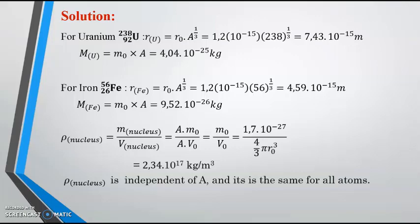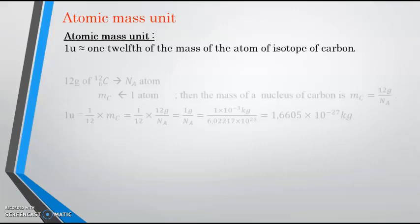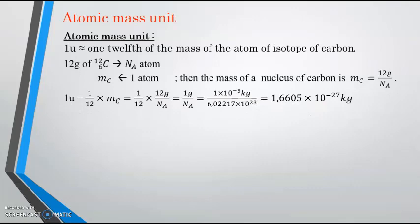Atomic Mass Unit. 1U represents one twelfth of the mass of the atom of isotope of carbon, carbon 12. This is the isotope for carbon C12. According to Avogadro's Number, every NA atoms of carbon 12, their mass is 12g.